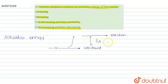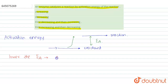It is clear from the graph that if the activation energy is low, then we will have to provide less energy to the reactant to perform the reaction. So lower the activation energy, the easier or faster the reaction will occur.